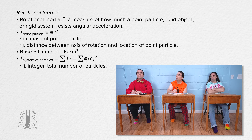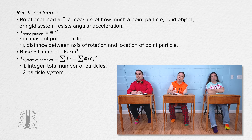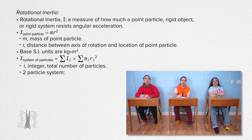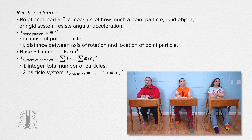Just to be clear about what that equation means: if there are two particles in a system, the rotational inertia of the system about an axis of rotation equals the mass of the first particle times the square of the distance the first particle is from the axis of rotation, plus the mass of the second particle times the square of the distance the second particle is from the axis of rotation.